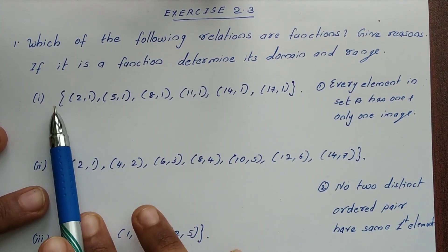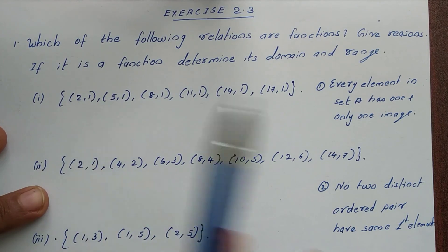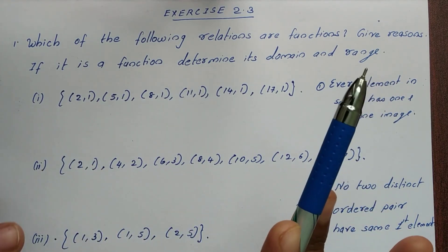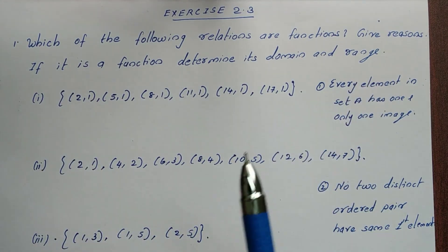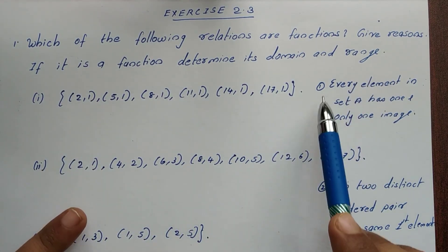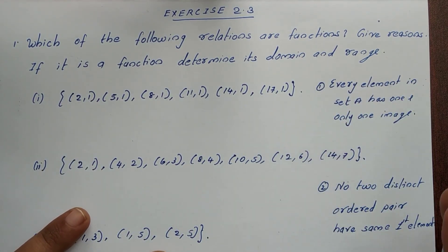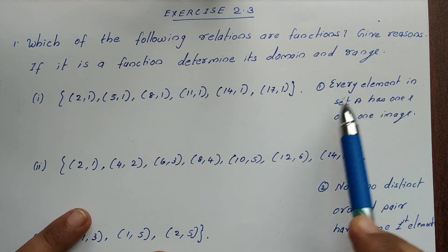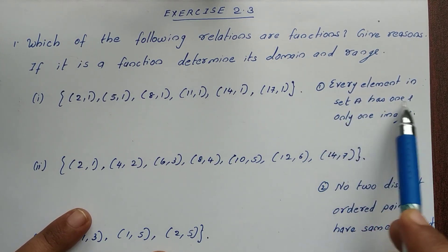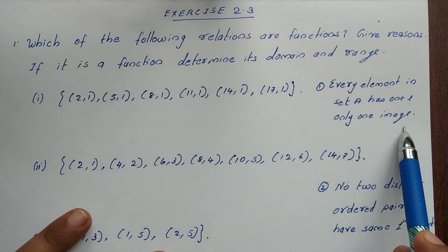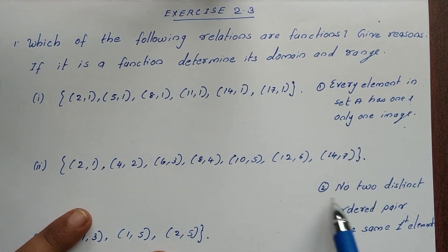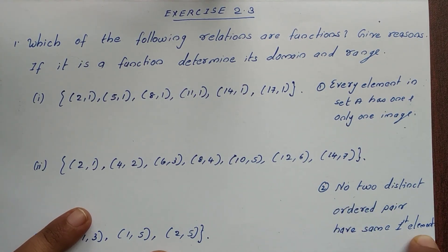First question: if it is a function, what is the condition? If it is a relation function, every element in set A has one and only one image. That is why no two distinct ordered pairs have the same first element.